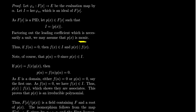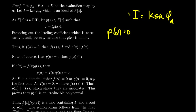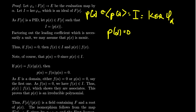By construction, p(alpha) = 0, since p belongs to the kernel of φ_alpha. Now if some other polynomial f has f(alpha) = 0, then f(x) belongs to the kernel I, which is the principal ideal generated by p(x), so p(x) divides f(x). This confirms the minimality property: p(x) divides every polynomial over F that has alpha as a root.